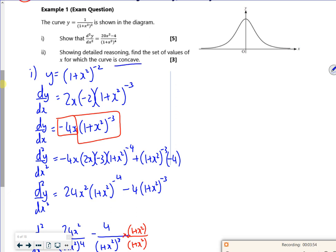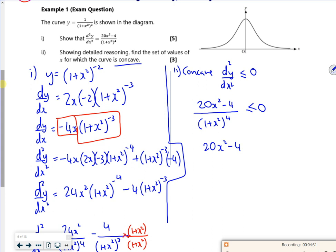So we know for concave that d²y by dx² is less than or equal to 0. So I'm saying that my equation, my 20x² minus 4 over 1 plus x² to the power of 4 is less than or equal to 0. If I multiply through by the bit on the bottom, I just end up with 20x² minus 4 is less than or equal to 0.